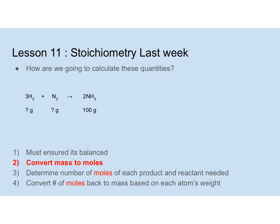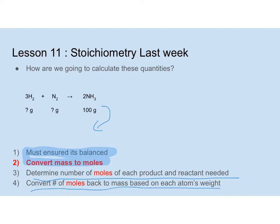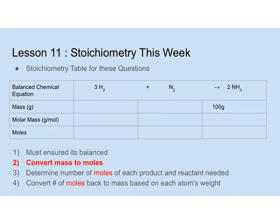So last week, this is what we focused on — this step right here. We ensured that things are balanced, then we had to convert from mass to moles. We wanted to convert from 100 grams and figure out how many moles that is. Today's lesson is about determining the number of moles of each product and reactant after we know the moles of the quantity given, and then converting moles back to mass based on the atom's weight.